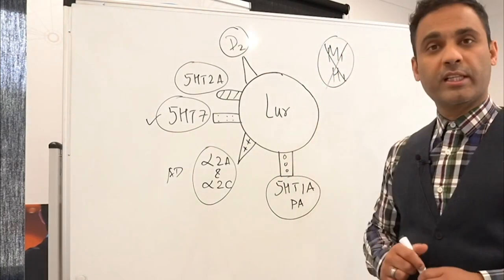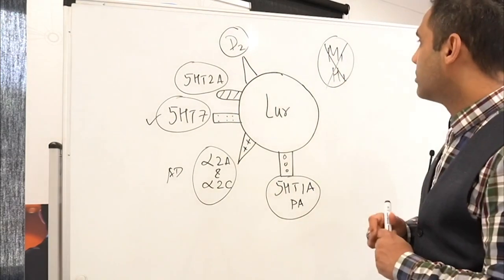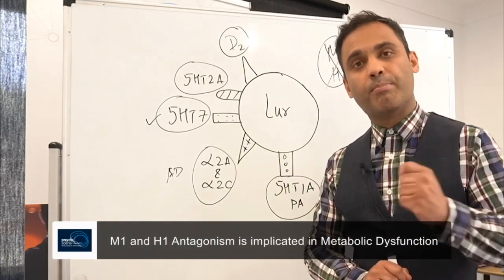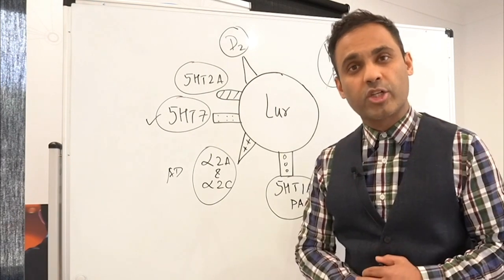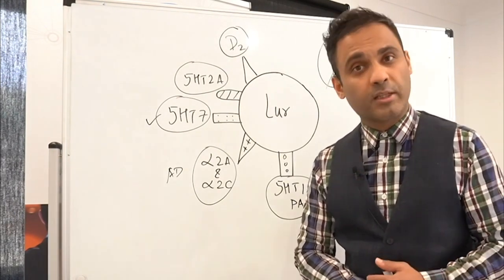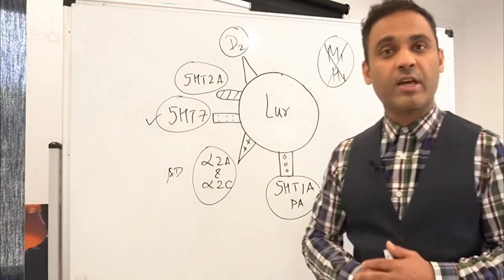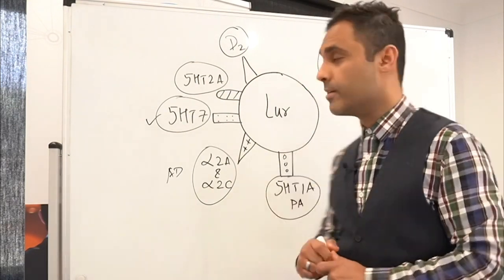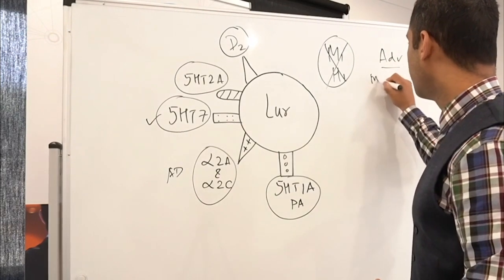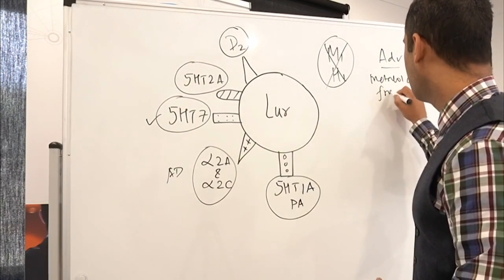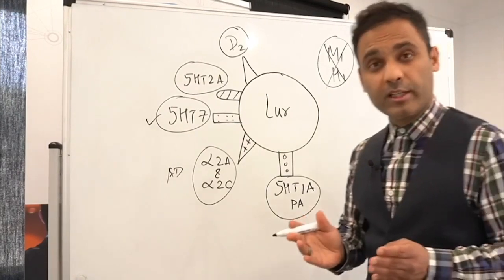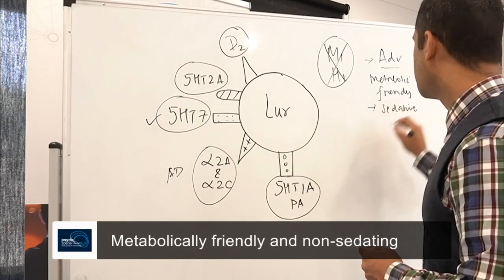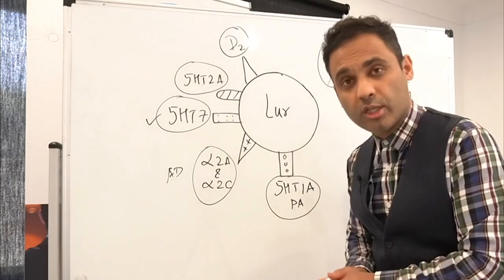Now, why is this metabolically friendly? What we do know is that there are two receptors, the M1 and the histamine receptor, the H1. These two receptors, when blocked, are associated with metabolic dysfunction, increased weight gain, disturbance of lipids, and increased blood glucose. Lurasidone does not have anti-histaminergic or anti-muscarinic properties and therefore is metabolically friendly. It also does not have a significant sedative action because it does not have anti-histaminergic property.